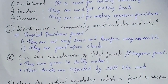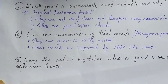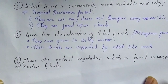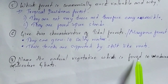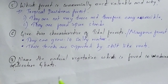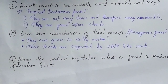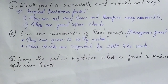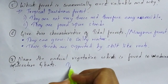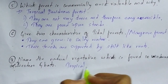Question number seven: name the natural vegetation which is found on the windward slope of the Western Ghats. This is one of the most important and repeatedly asked questions. The natural vegetation found on the windward slope of the Western Ghats is tropical evergreen forest.